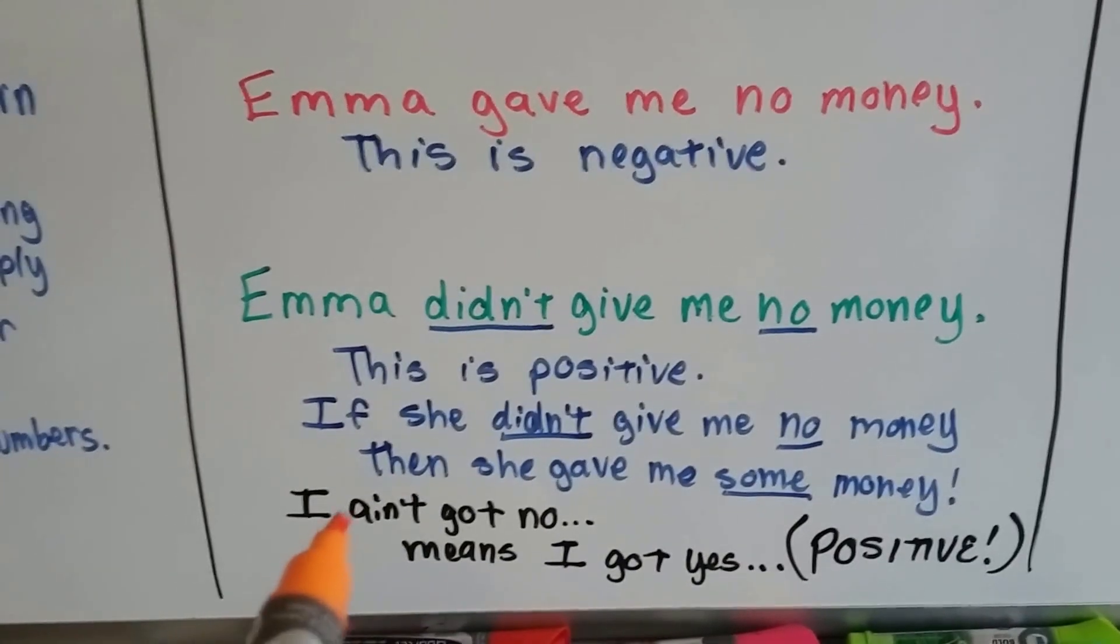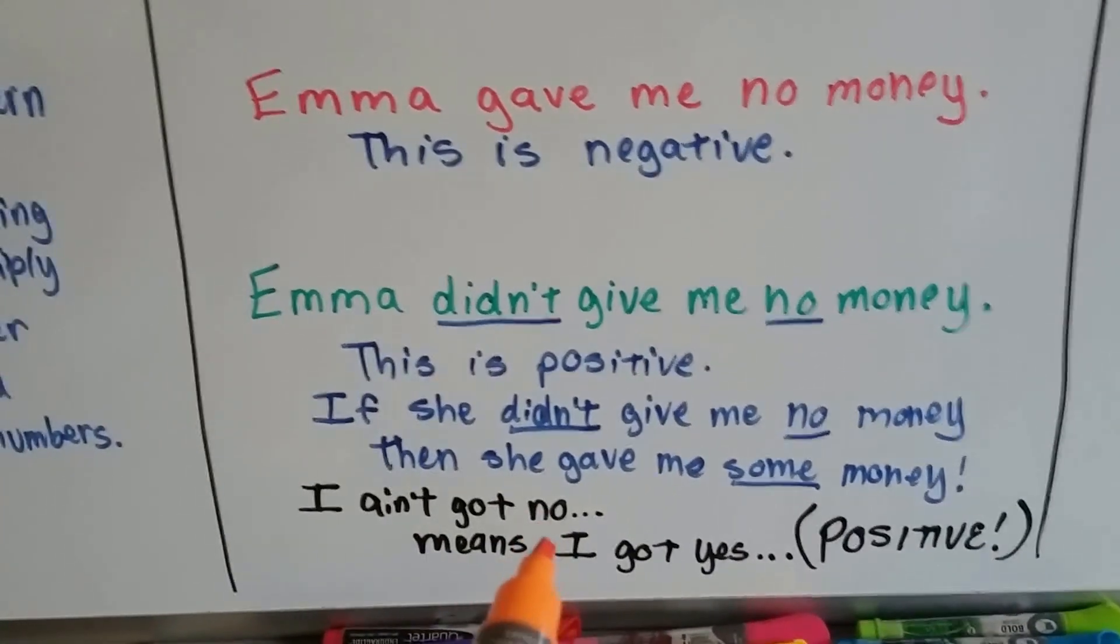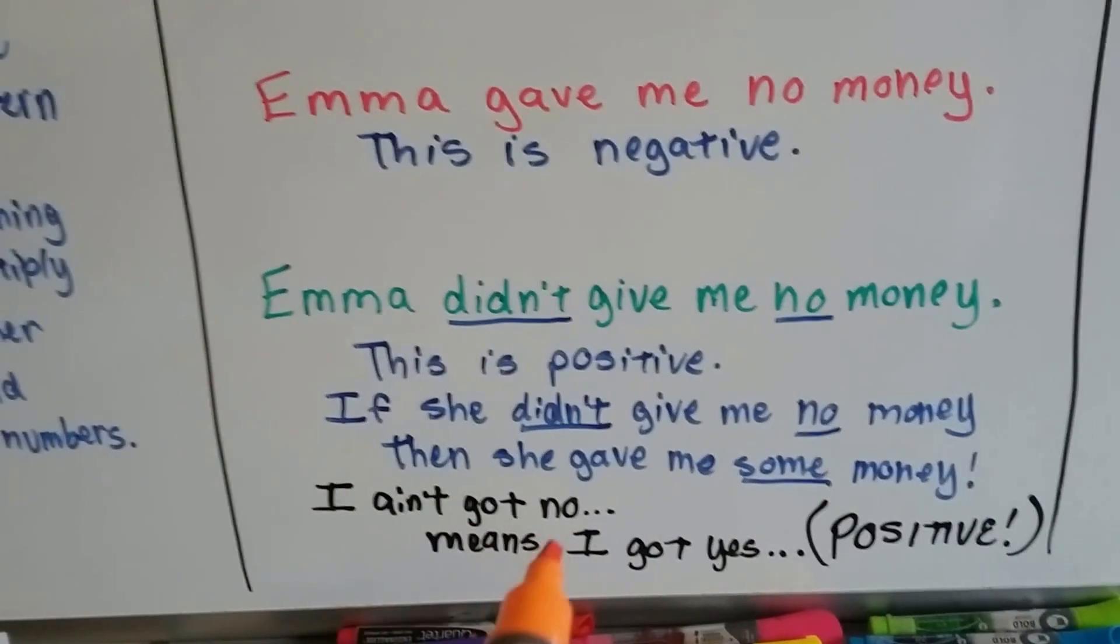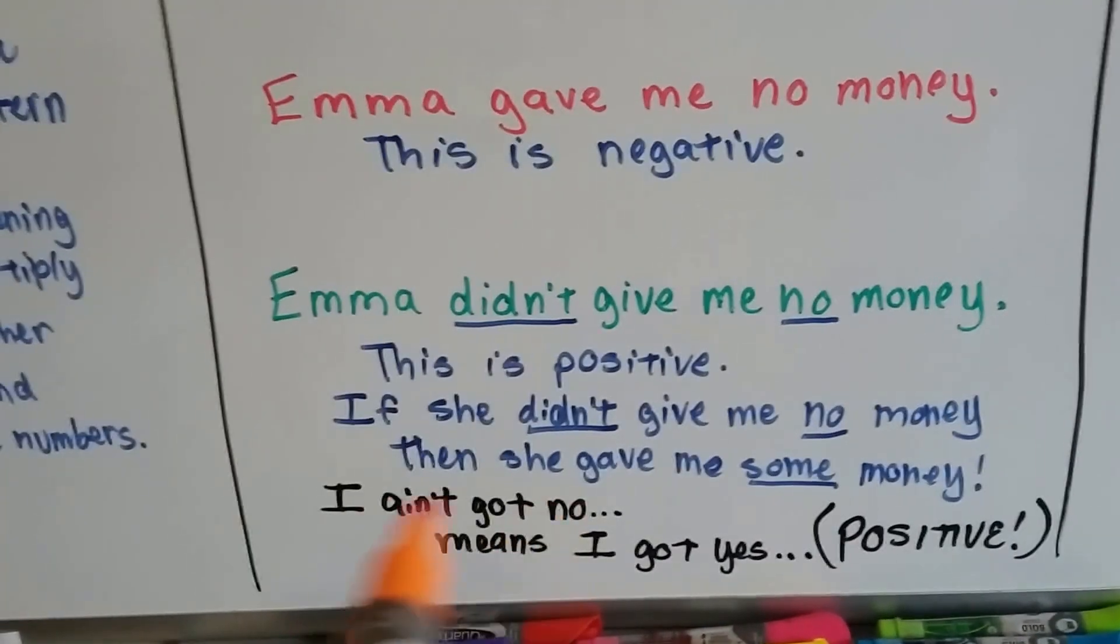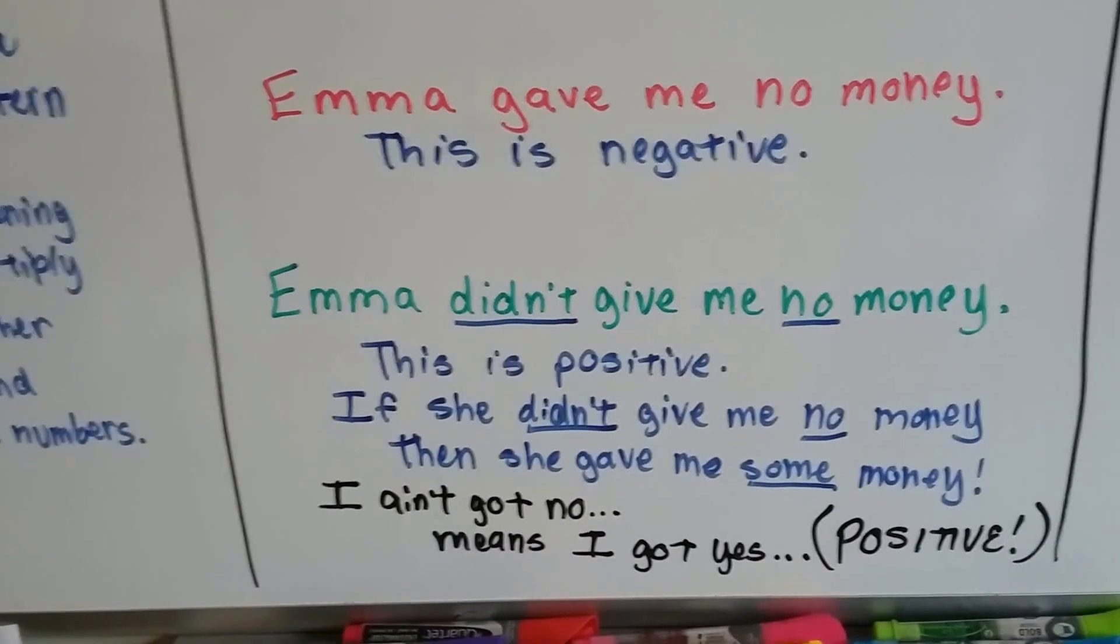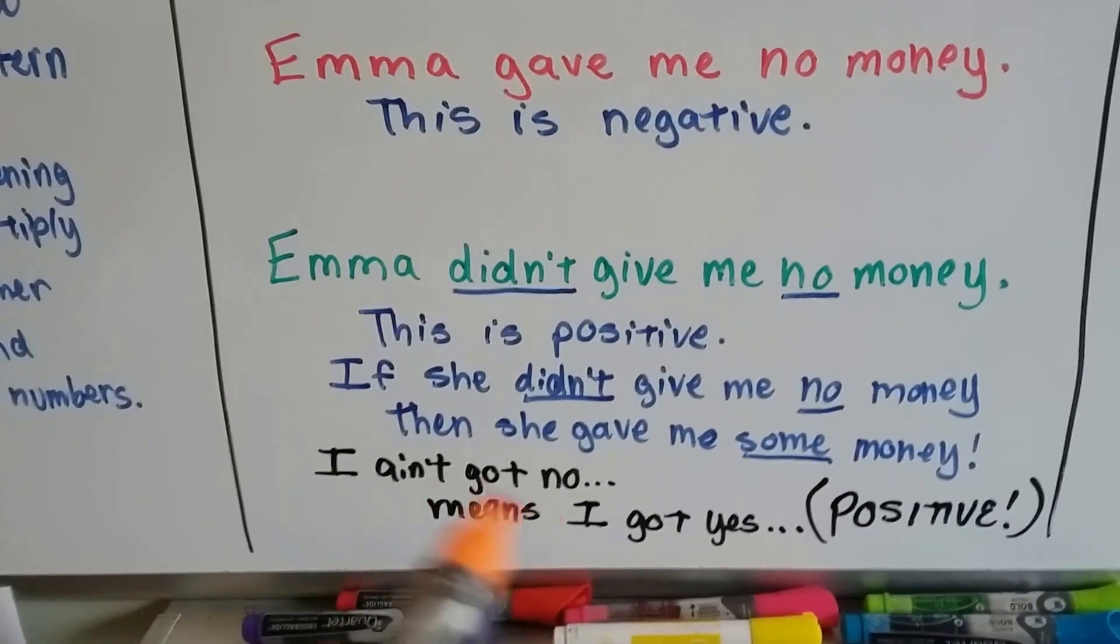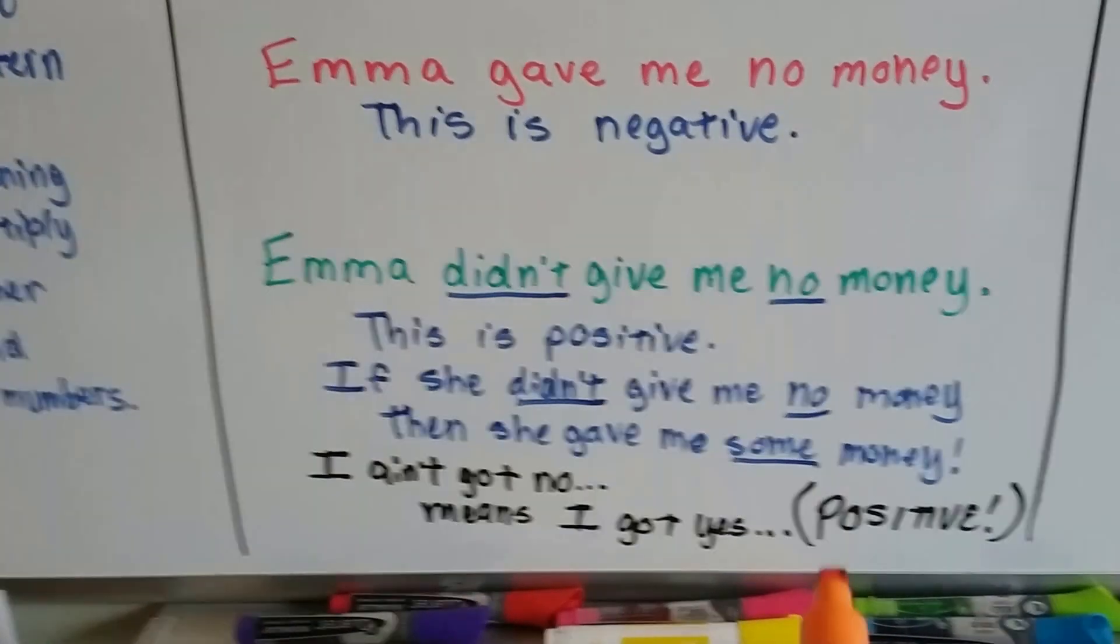Does that make sense to you? If you don't have a no, then you must have a yes. So anytime you hear someone say I ain't got no, say, oh, so that means you do have it. Because you're doing a double negative, that means yes. That's a positive.